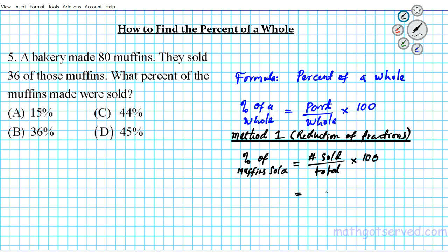Let's do it. The number sold is 36 divided by the total which is 80. So this is the fraction sold, part of a whole. We're going to multiply this by 100. What does this multiplication by 100 mean? Well, it's just converting your fraction into percent format. But if you divide this using long division, you end up with a decimal and then you just multiply by 100 to convert it to percent.